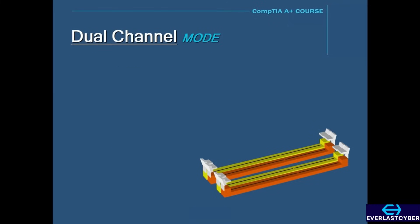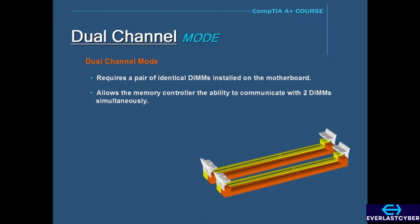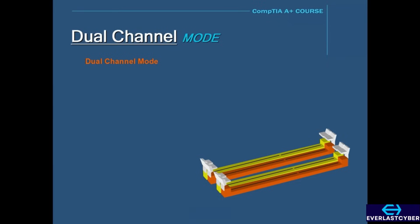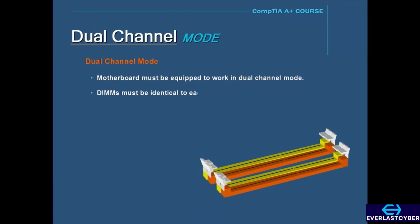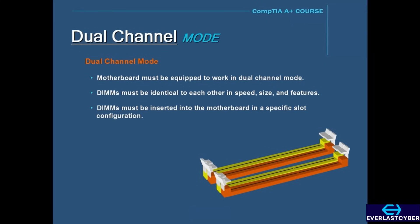In order to meet the higher demands of faster processors and memory controllers, a new technology was developed called Dual Channel Mode. Dual Channel Mode requires a pair of identical DIMMs installed on the motherboard, which allows the memory controller the ability to communicate with two DIMMs simultaneously, increasing the speed of accessing the memory. In order for Dual Channel to work, the motherboard must be equipped to support it, and the memory DIMMs must be identical in speed, size, and features. Then the DIMMs must be inserted into the motherboard in a specific slot configuration to enable Dual Channel Mode. Typically, the memory slots will be color-coded to help identify where the DIMMs should be inserted.